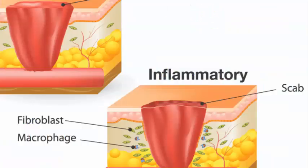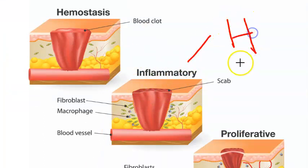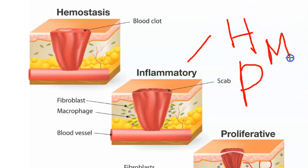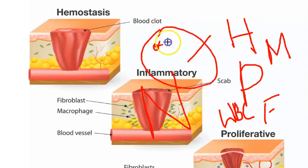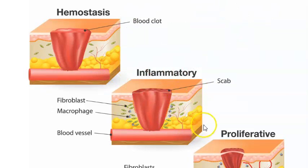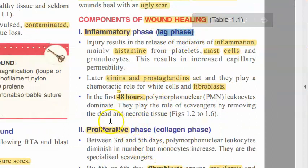In the inflammatory phase you have many inflammation mediators — histamine, prostaglandins, mast cells — which bring in fibroblasts and white blood cells. Neutrophils play a major role in removing necrotic material. Neutrophils are called polymorphonuclear cells. This stage of inflammation is also called the lag phase, and it lasts only about 48 hours.